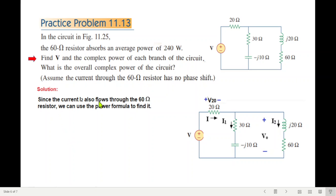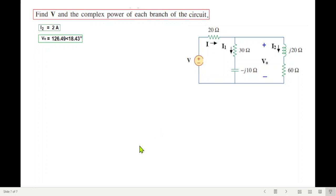So the current I2 also flows through the 60 ohm resistor. So this current flowing through here, we can use the power formula to find this current I2. So we'll write P is equal to I square into R. So I is square root of P over R. That's 4. And therefore I or I2 is 2 ampere. And now we know I2. Therefore we can find the V0. I2 multiply by this impedance. So this is our V0. So we know I2. We have found V0 also.